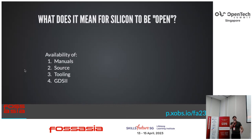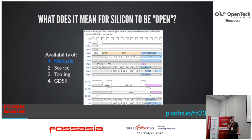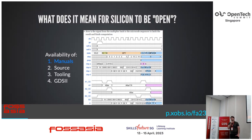So to begin with, what does it mean for silicon to be open? Broadly, there are four things that need to happen for a system to be considered completely open. For starters, we need manuals. If I give you a piece of silicon and there's no manual whatsoever, there's not much you can do with it. So you need to know things like characterization, what voltage does it run at, where the debug pins come in, what does the memory map look like if it's a CPU.